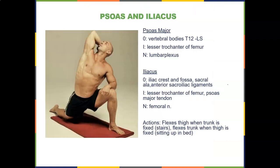This is a great stretch for the psoas — half kneeling with the hip extended and rotating to get the iliacus. The psoas originates from vertebral bodies T12 through L5, inserts into the lesser trochanter of the femur, and is supplied by the lumbar plexus.